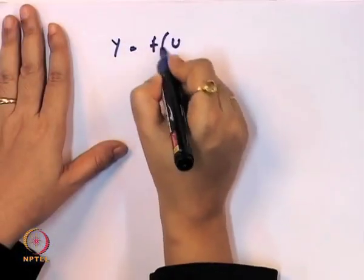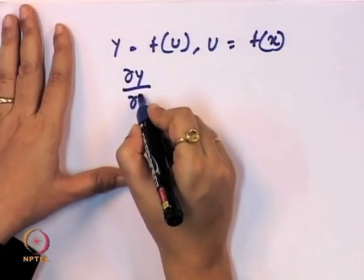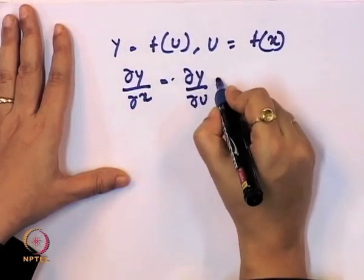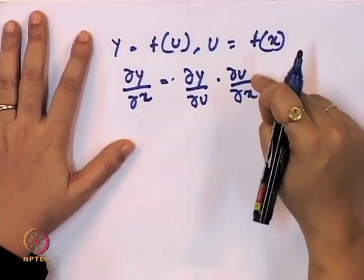Now we will see the last category: when the function is a function of a function — the chain rule. We discussed constant, power, sum/difference, product, and quotient functions. Now we take a functional form where y is a function of u and u is a function of x. In this case, del y / del x = (del y / del u) · (del u / del x).